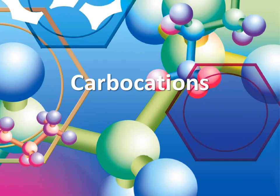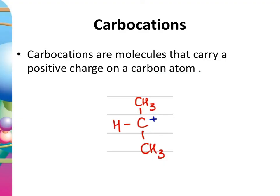We're looking at alkenes, but before we look at them explicitly, I want us to look first at carbocations. A carbocation is a molecule in which there is a carbon atom with a positive charge on it. That central carbon has effectively lost the electron it would have shared with another atom it was bonded to, so it has one more proton than electrons — giving us a positively charged carbon.